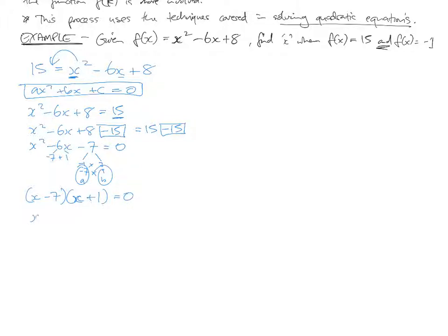So that lets me do the sum product rule. My a and b are these numbers, negative 7 and 1. So it's going to be x takes 7, x plus 1, factorization, and they equal 0. So then, x takes 7 can be 0, or x plus 1 can be 0. Therefore, x is either 7, or x is negative 1.